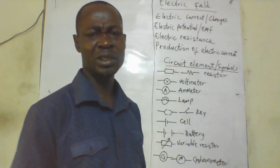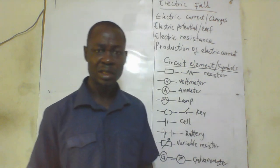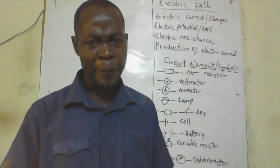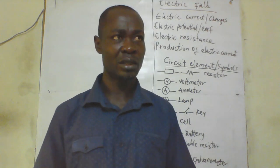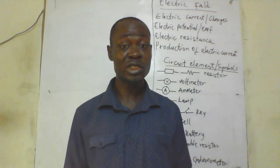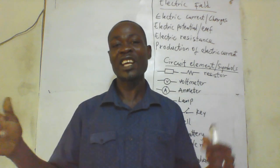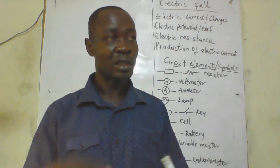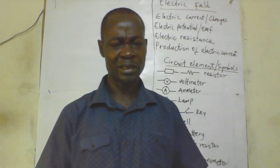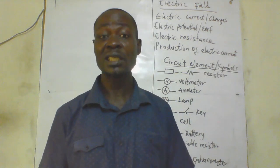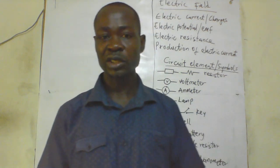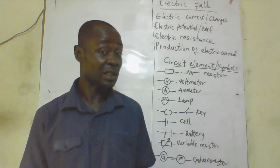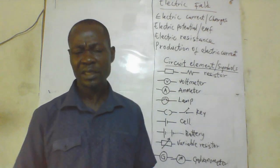Let's look at electric circuits. An electric circuit is the path through which electric current flows. When you look at any building or structure that has electricity in it, there is a connection of wires with different circuit elements. These wires are the tracks through which electric charges flow when conducting electric current. That is an electric circuit, and we have three types of electric circuits.